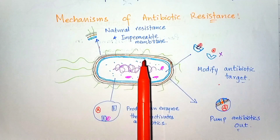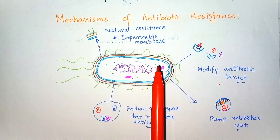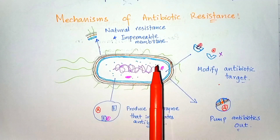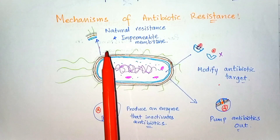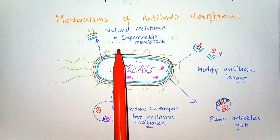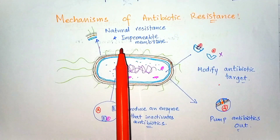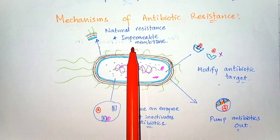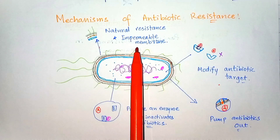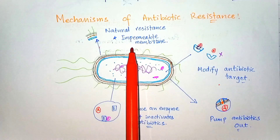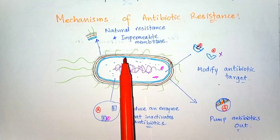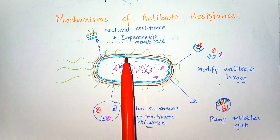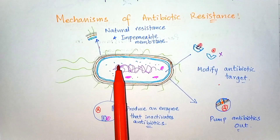First, some bacteria are naturally resistant due to an unusually impermeable cell membrane, or they may lack the target that the antibiotic attacks on the bacterial cell.